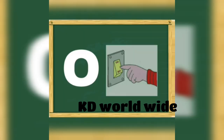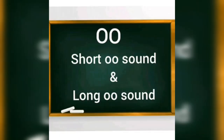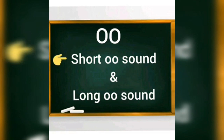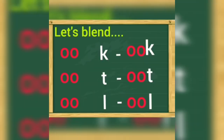Children, you have learned that the letter O says OH. But when we write two O's side by side, we get two sounds: a short OO sound and a long OO sound. Let's blend the short OO sound with some consonants. Children, repeat after me.